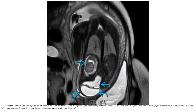SSFSE T2 MRI in a 31-week gestation fetus shows a sacral lumbar dysraphic defect. Note the appearance of two fluid-containing sacs, typical of a terminal myelocystocele. No normal left kidney was seen, and the right kidney showed hydroureteronephrosis.